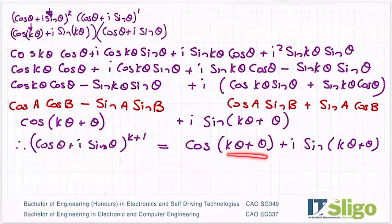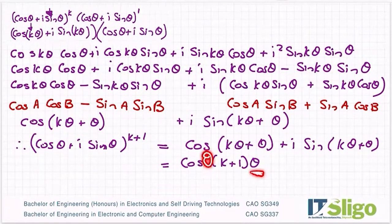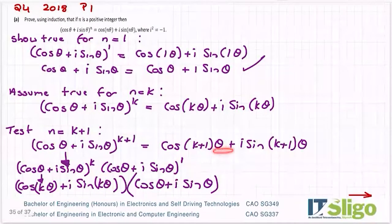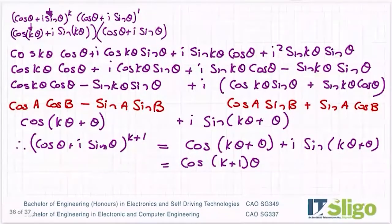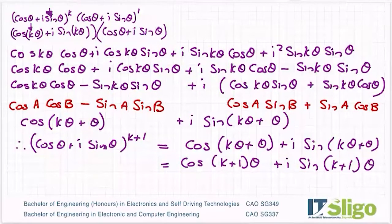Because remember when we subbed in N is equal to K plus one, we're saying we'd like to say that that is equal to cos times K plus one times theta plus I sine K plus one times theta. So if I factor out theta, won't I be there? So that's equal to cos of K plus one times theta plus I sine K plus one times theta.